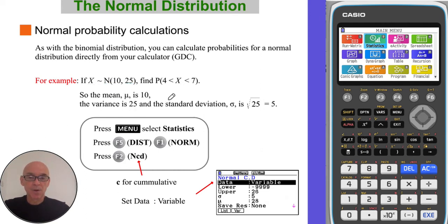We're asked to find the probability that x lies between 4 and 7. So the mean value is 10. The variance, this is the variance here, is 25. And we find the standard deviation by taking the square root of the variance, so the standard deviation is 5.